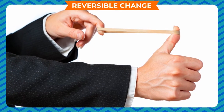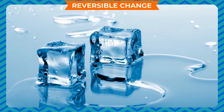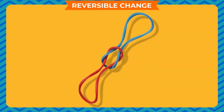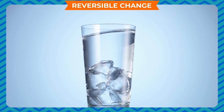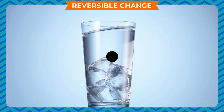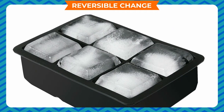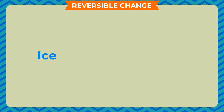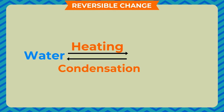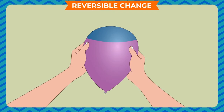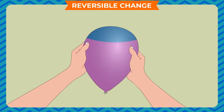A change which can be reversed on removing the cause is called a reversible change. In this change, the products formed can be converted back into their original forms. For example, ice can be converted back into water by placing it outside the fridge — ice melts, water freezes, heating causes condensation into steam. Similarly, the shape of a balloon comes back to its original form when you stop squeezing it.